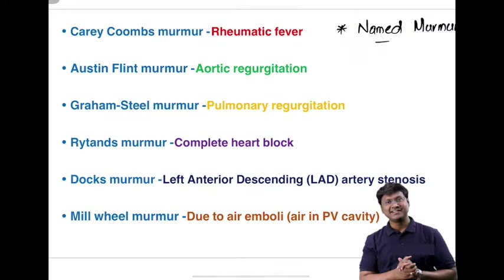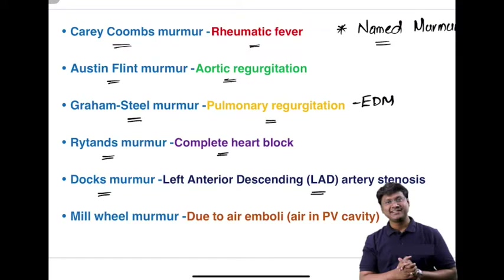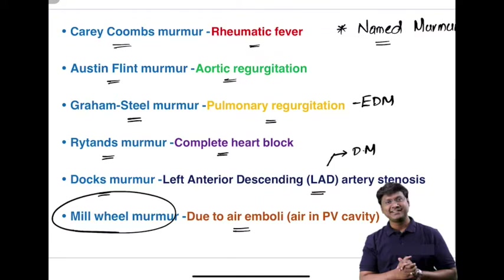Named murmurs in cardiology: acute rheumatic fever causing acute MR produces the Carey Coombs murmur. Aortic regurgitation has the Austin Flint murmur — a mid-diastolic functional murmur. Pulmonary regurgitation produces the Graham Steell murmur — an early diastolic functional murmur. Complete heart block has the Retans murmur — a diastolic murmur. Left anterior descending artery stenosis produces the Dox murmur — also diastolic. Air emboli produce the mill wheel murmur.